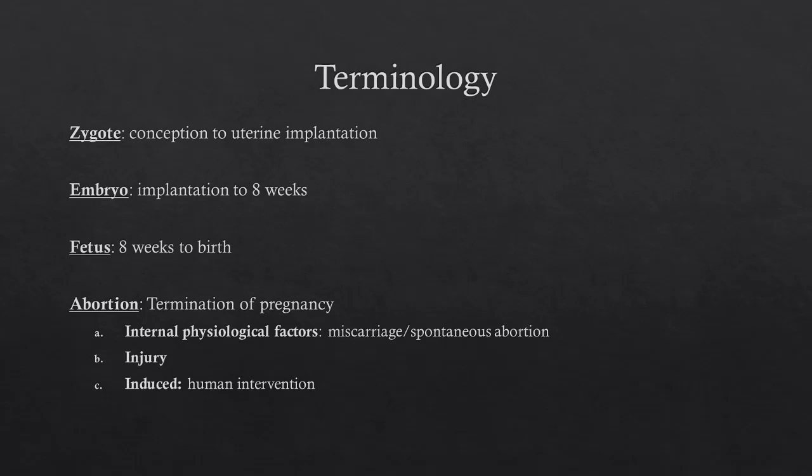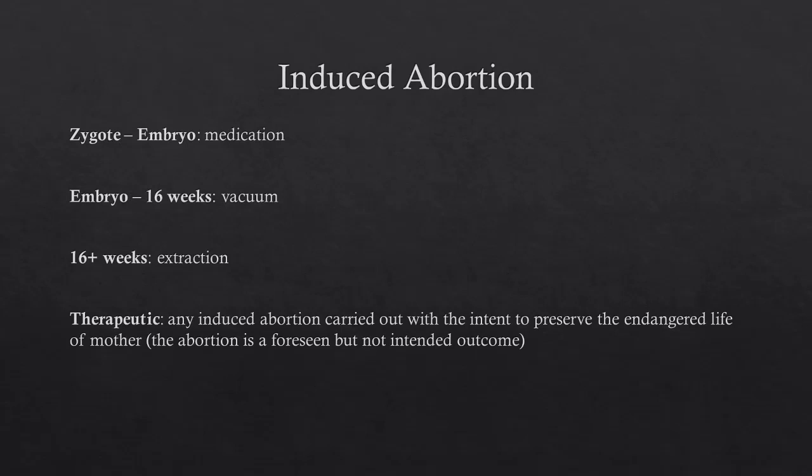So, what is abortion? Abortion is simply the termination of pregnancy, and it happens for one of three reasons. Internal physiological factors, which produce a miscarriage, otherwise known as a spontaneous abortion. It can happen due to injury, or it can be induced, meaning that there is a human intervention. Induced abortion from the point of zygote to embryo happens through medication. From the point of embryo until about week 16, it is done with a vacuum, and from week 16 until birth, it is done by extraction.